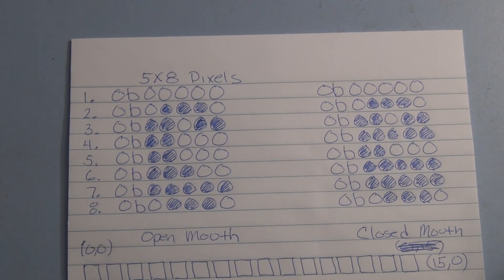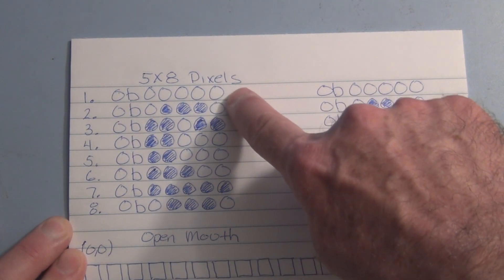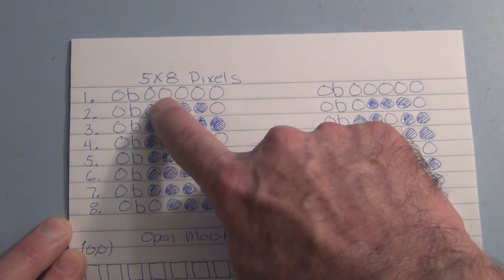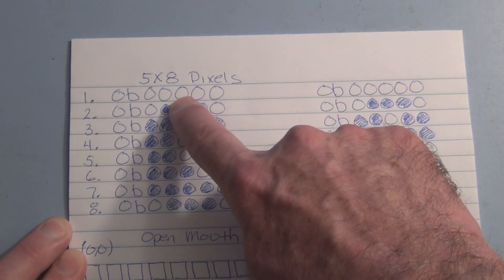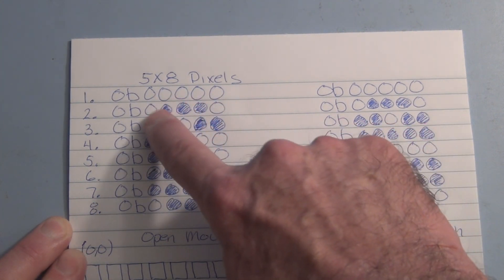Now the way we determine which pixel is on or off is we put a one or zero in these bytes. Here we have an array of eight bytes but remember it's only the five least significant bits that we get to use to create our characters.